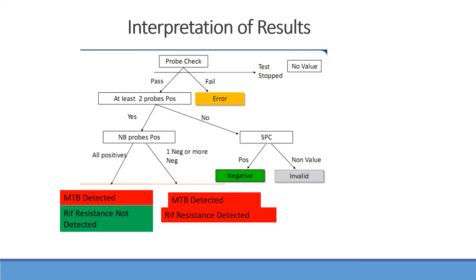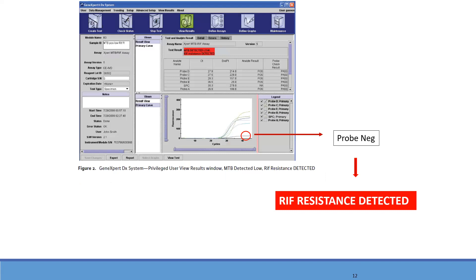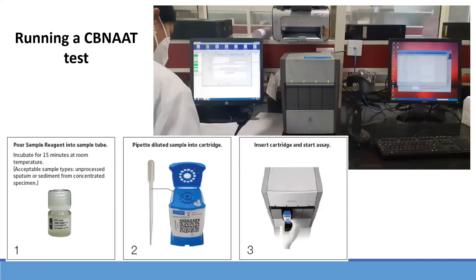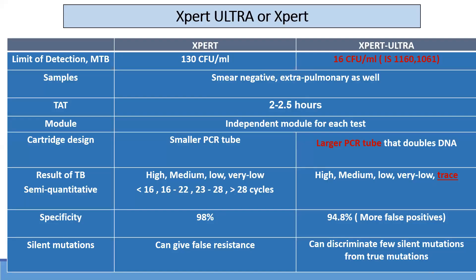The interpretation is given simply in green and red — red for anything detected. It is so simple that even a technician, nurse, or a person with very minimal training can do this. When one probe has not hybridized and has not given fluorescence, it is probe-negative, indicating rifampicin resistance is detected. Running a CBNAT test is fairly simple: pour sample reagents into the sample tube, incubate for 15 minutes, pipette the diluted sample into cartridges, insert cartridges, and start the assay.